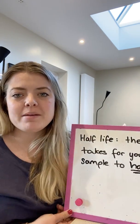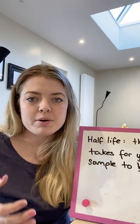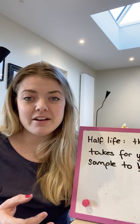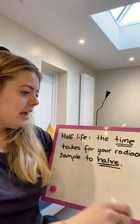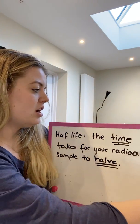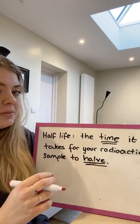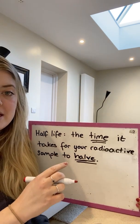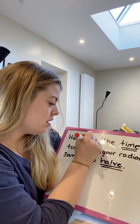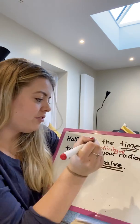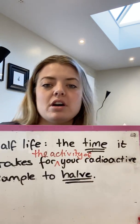Practically, you can't really measure the number of undecayed nuclei directly, because you can't go into your sample with a microscope and count them — by the time you finish counting, loads of them would have decayed and your answer would be different. So instead, what we do is count the activity: the number of decays per second.